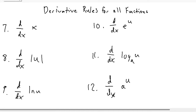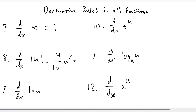Starting with number seven, the derivative of x will always be one. The derivative of the absolute value of u will be equal to u over the absolute value of u times u prime, and u cannot equal zero, otherwise it will be undefined.